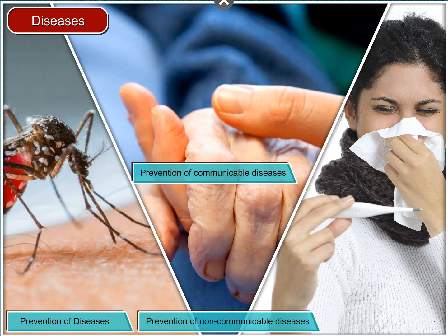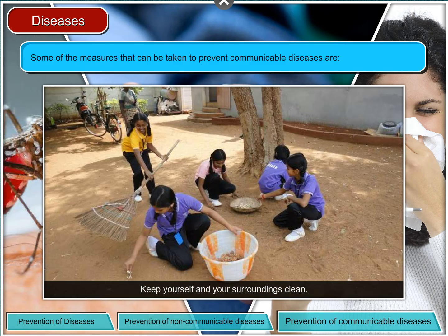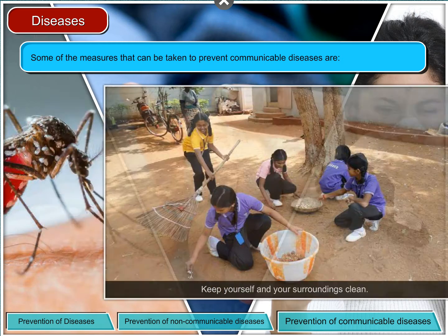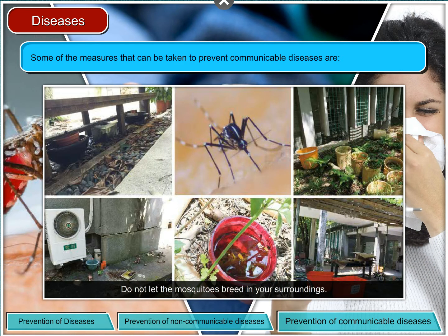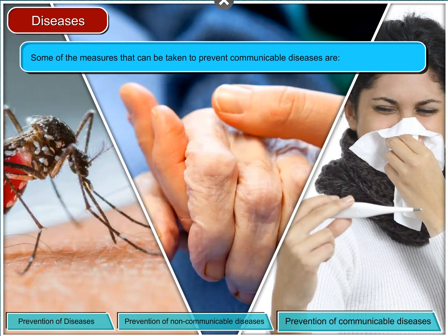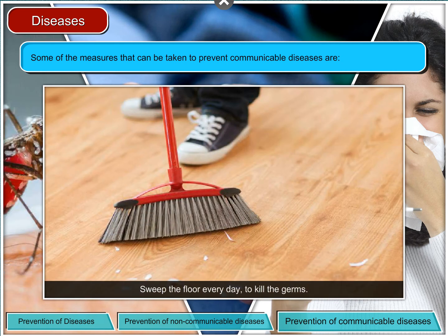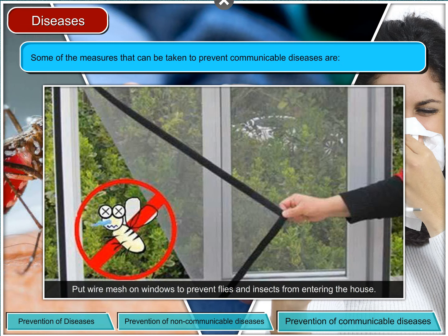Typhoid is one such communicable disease. Some of the measures that can be taken to prevent communicable diseases are: keep yourself and your surroundings clean so that the germs do not spread to others. Always consume water after filtering and boiling. Sweep the floor every day to kill the germs. Put wire mesh on windows to prevent flies and insects from entering the house.